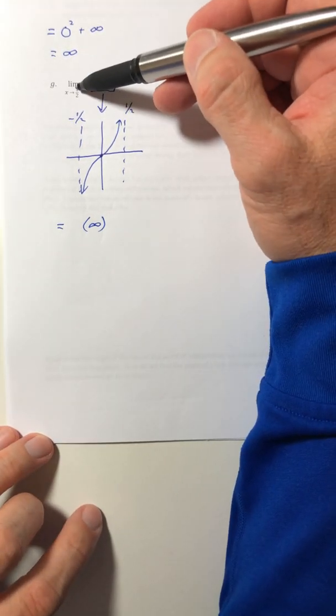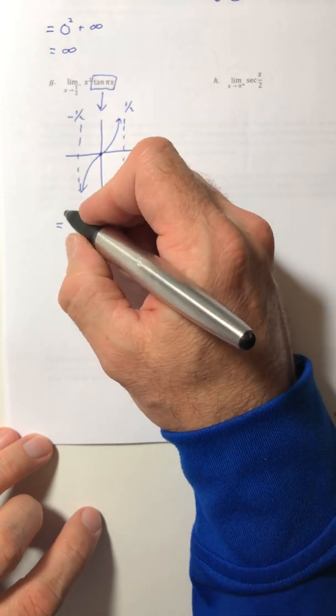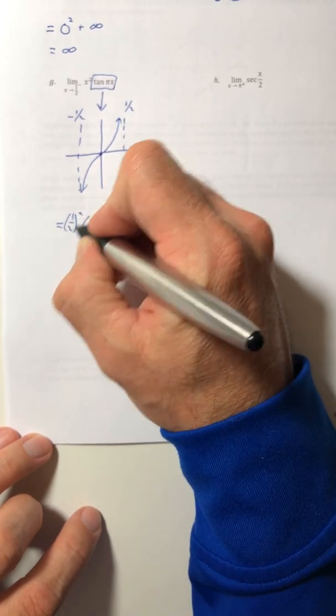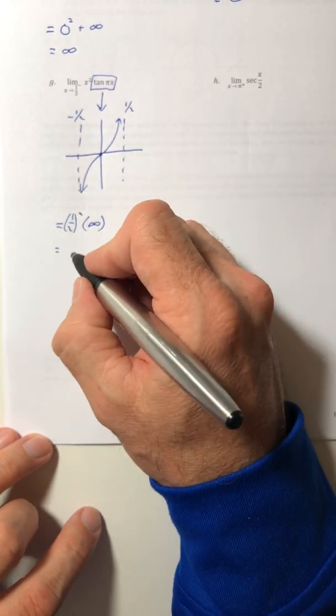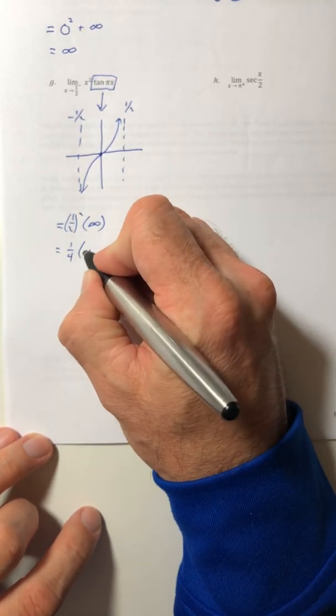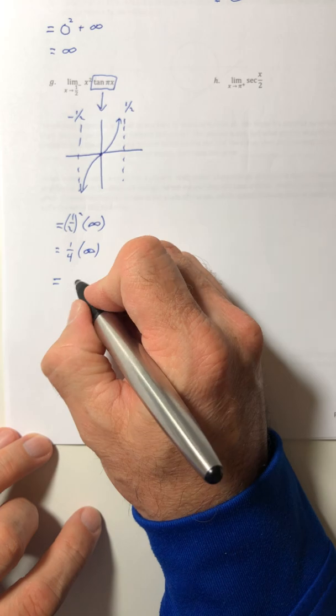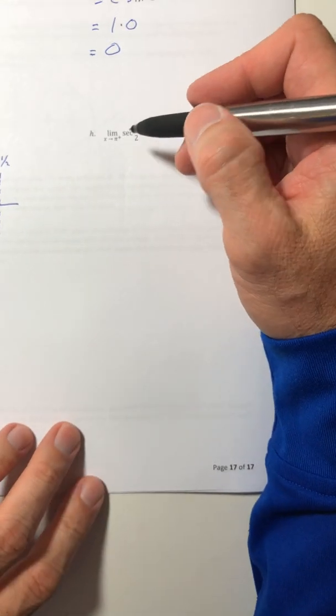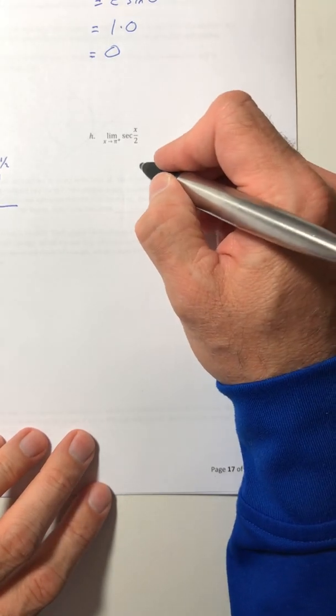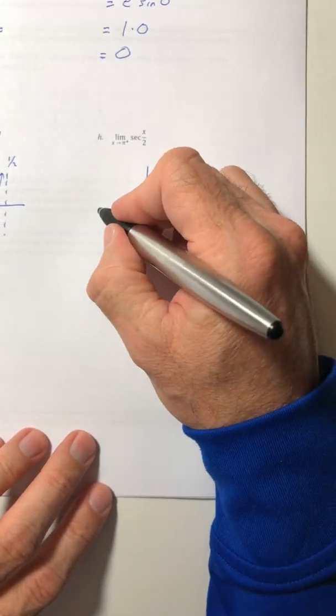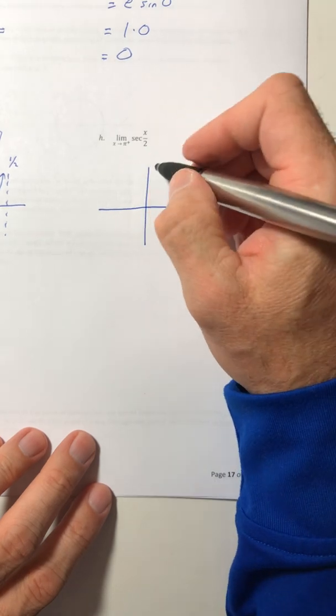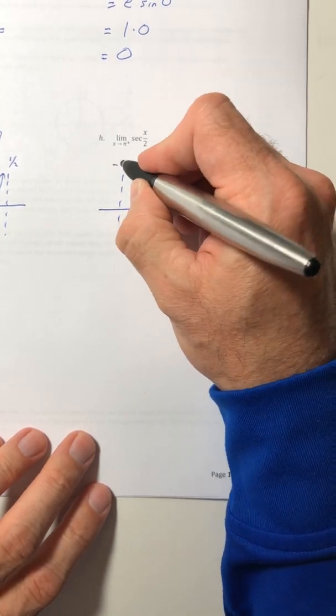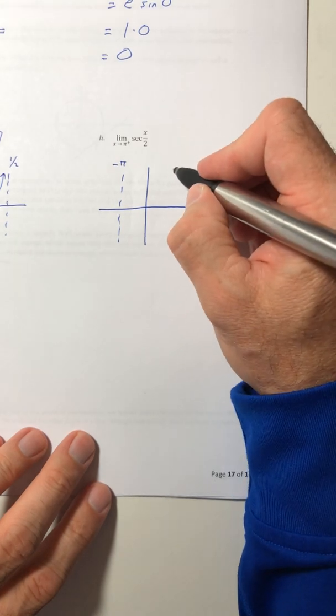So that's just the tangent of the pi x part. The x squared, you can plug one half into x squared. And so you have a fourth times infinity, which is just infinity. Now part H, the graph of secant has vertical asymptotes as well. And in this case, they're going to be at negative pi and pi.